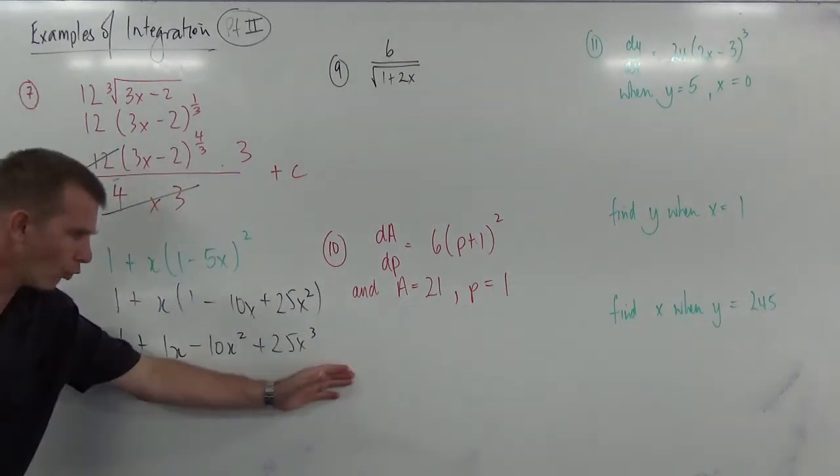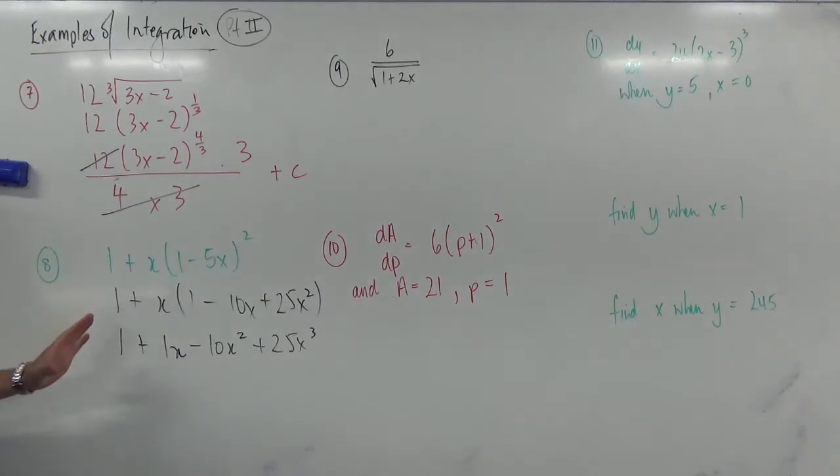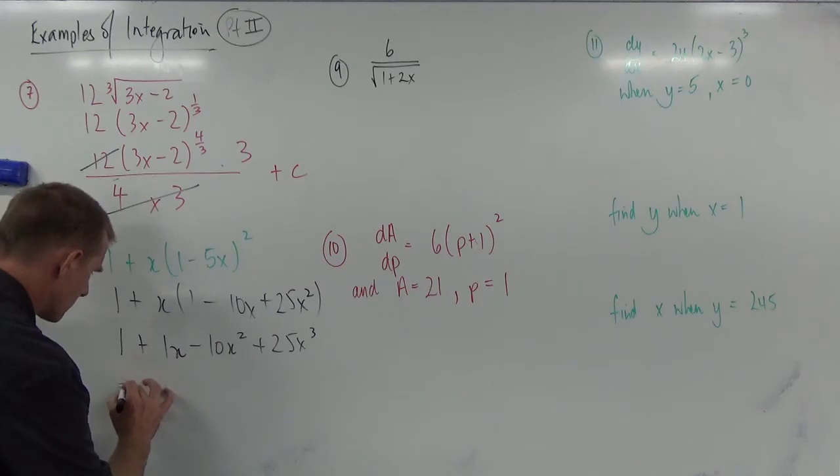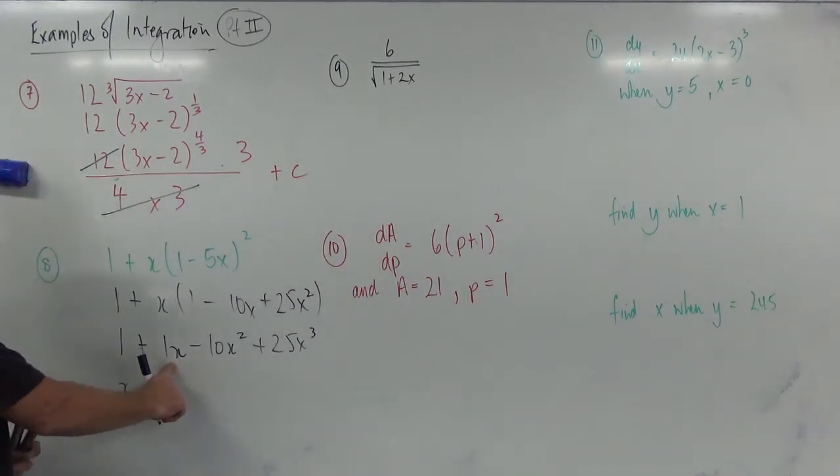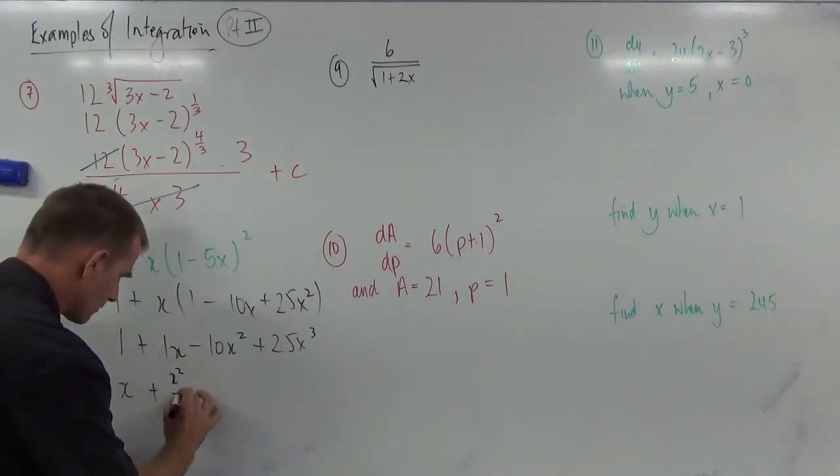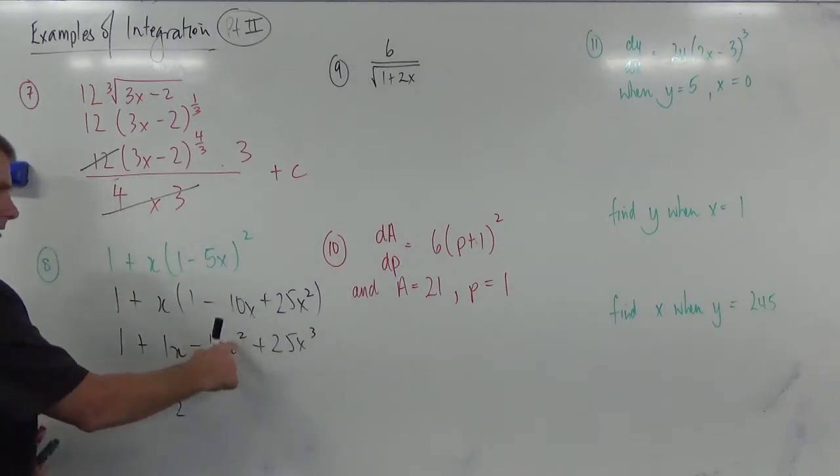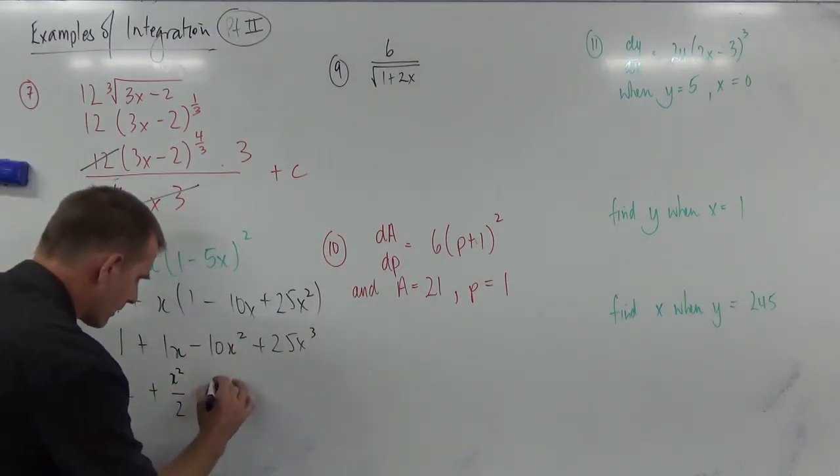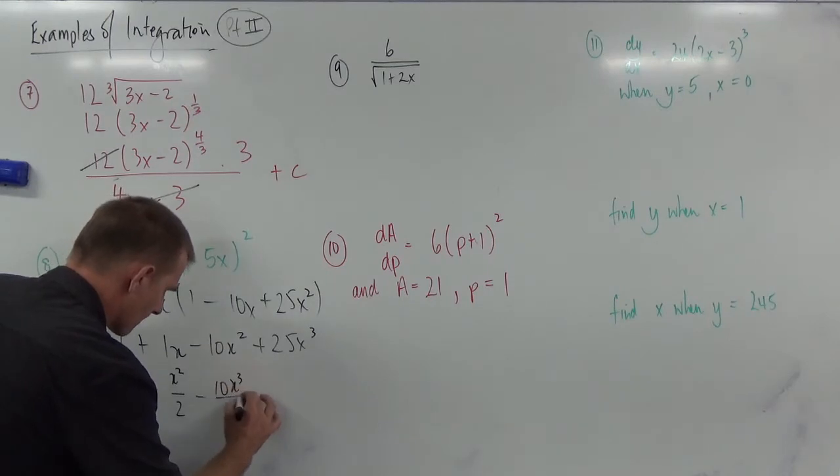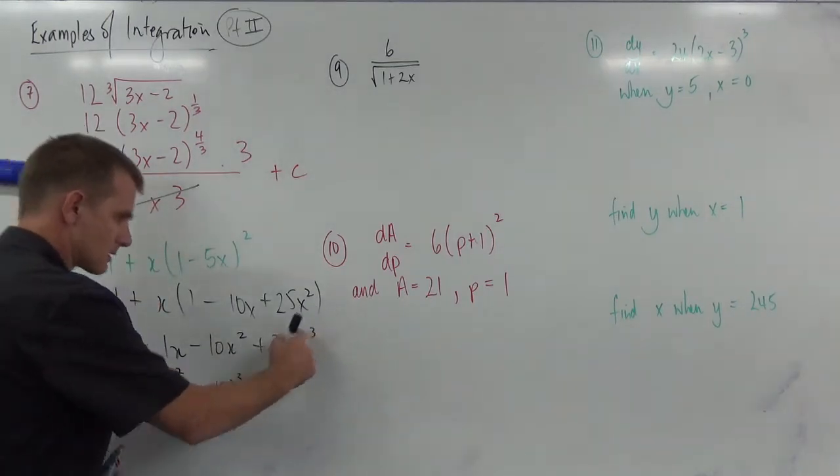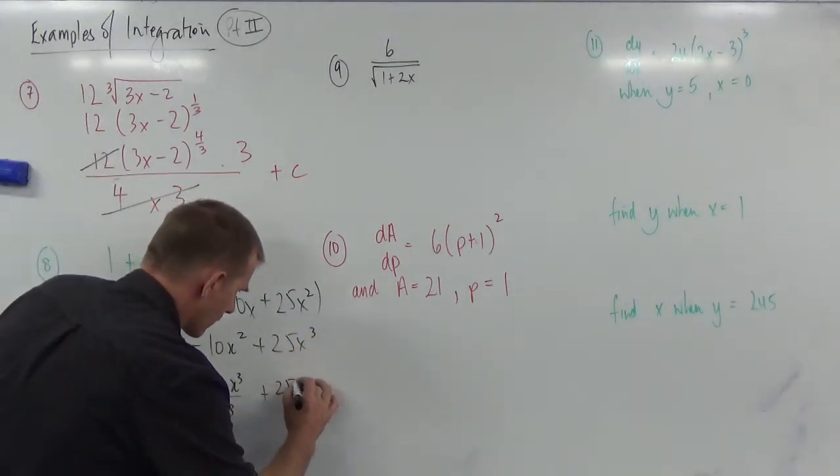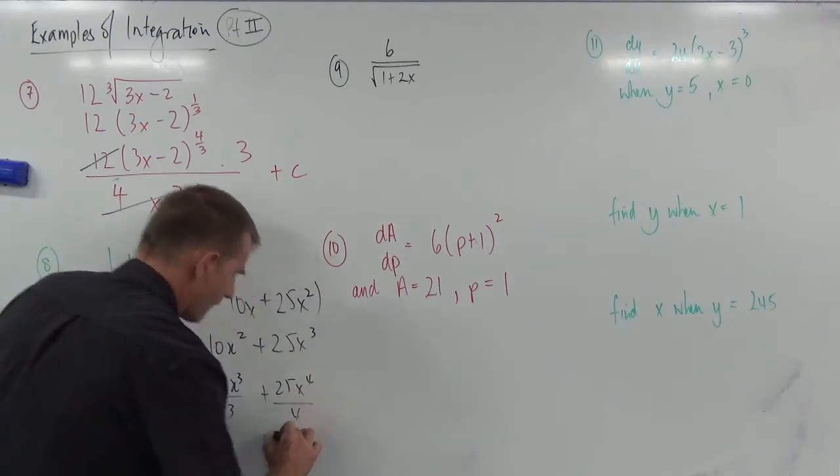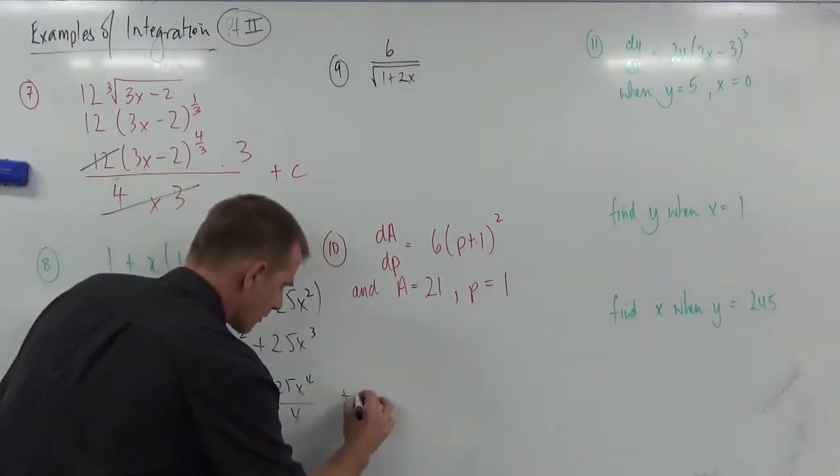But we can multiply out again. 1 plus. Multiplying x through there will get 1x minus 10x squared plus 25x cubed. And now, all of this is just simple integration. Nothing fancy. Integrate at all. This is going to be x. This is going to be x squared over 2. This is going to be x cubed divided by 3. This is going to be x to the 4. So it's going to be 25x to the 4 over 4. And plus c.